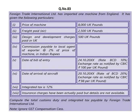Move to question number 83 now. This is an important question. Foreign Trade International Limited has imported a machine from England - England means UK, so pound comes here. The following particulars are given: machine price is 8000, freight is 2500, design and development charges is 500 - all in UK pound. Commission payable by local exporter - importer's commission is not considered. The date of bill of entry is 24th, so this date is considered because bill of entry date is considered.